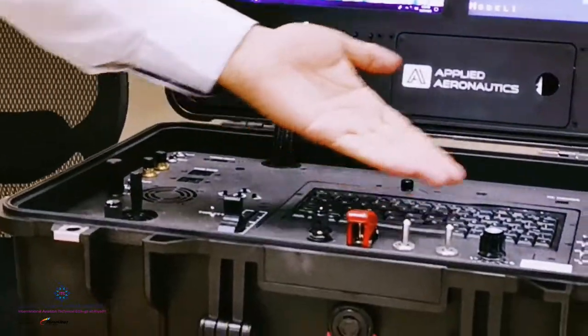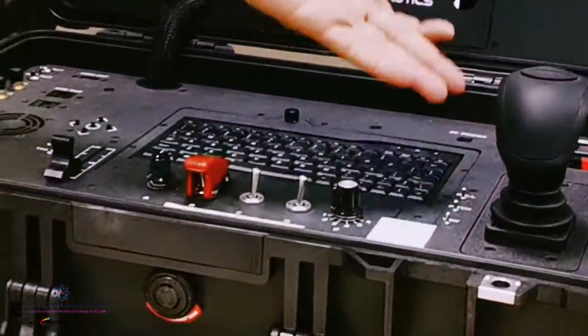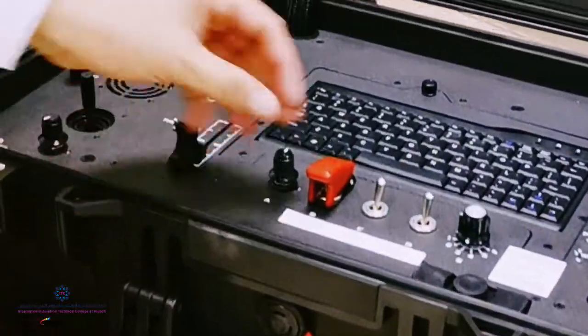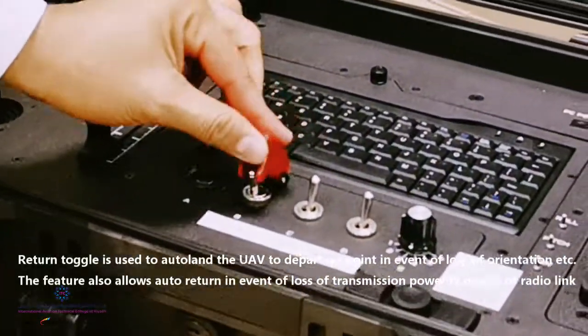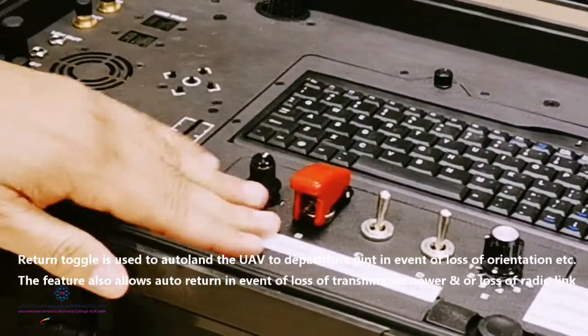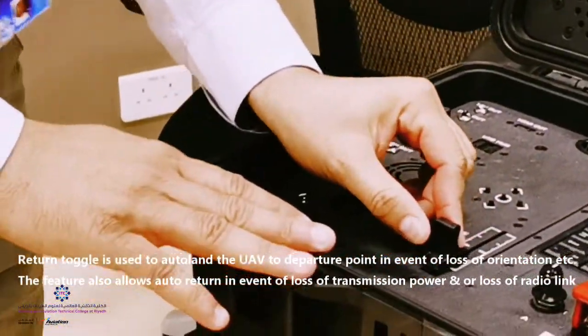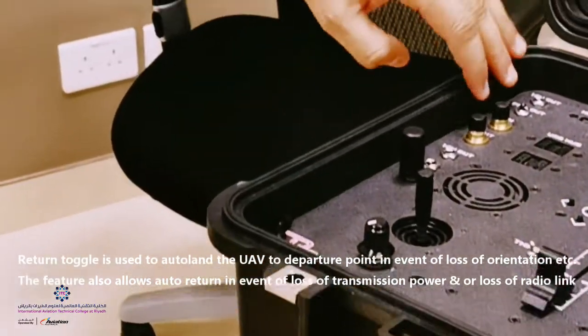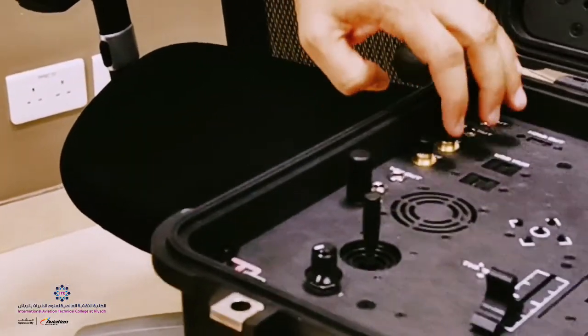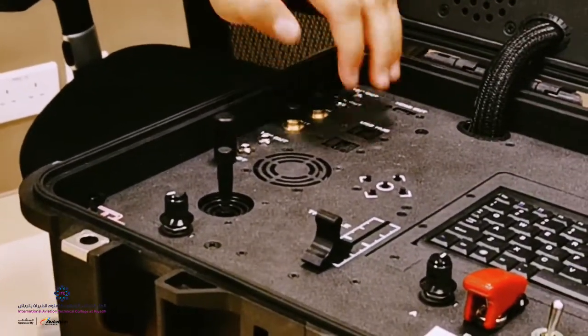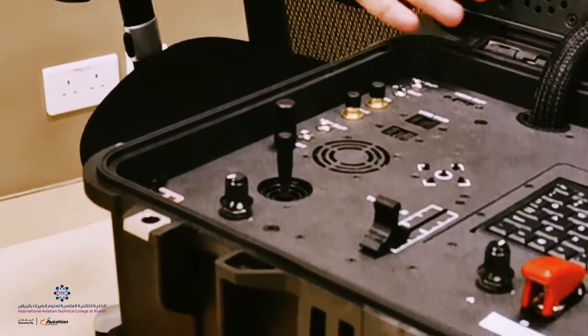We get all trim switches, roll and pitch and yaw switches, and the return to home switch which we use to return the UAV back to home, and throttle control, and the output to use it for auxiliary systems such as additional monitors or stuff like that.